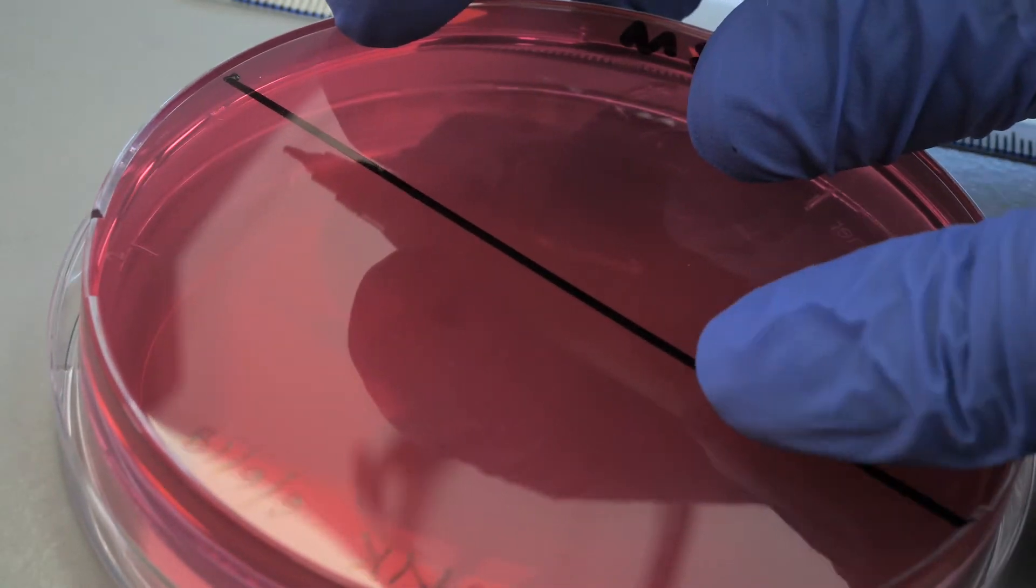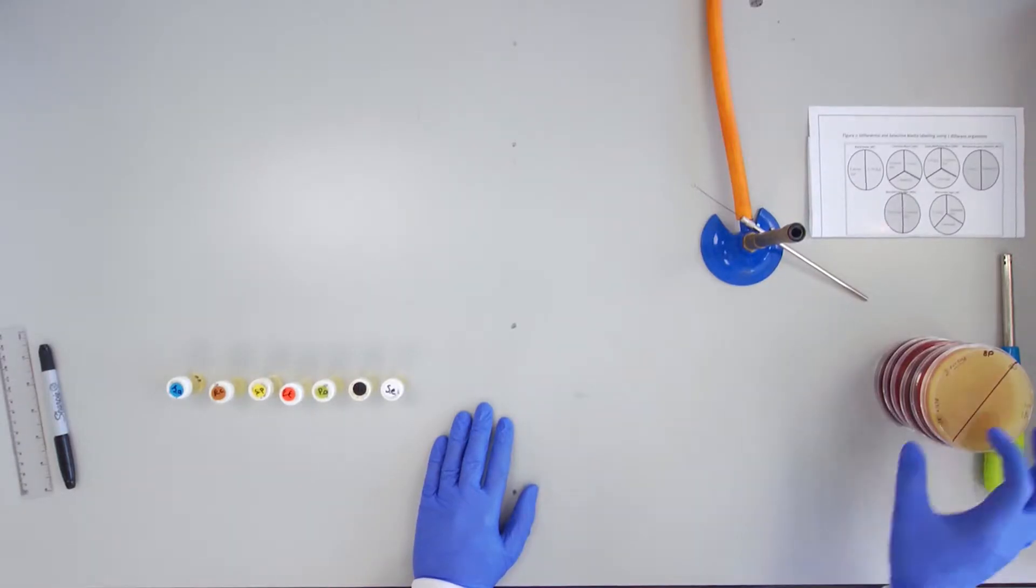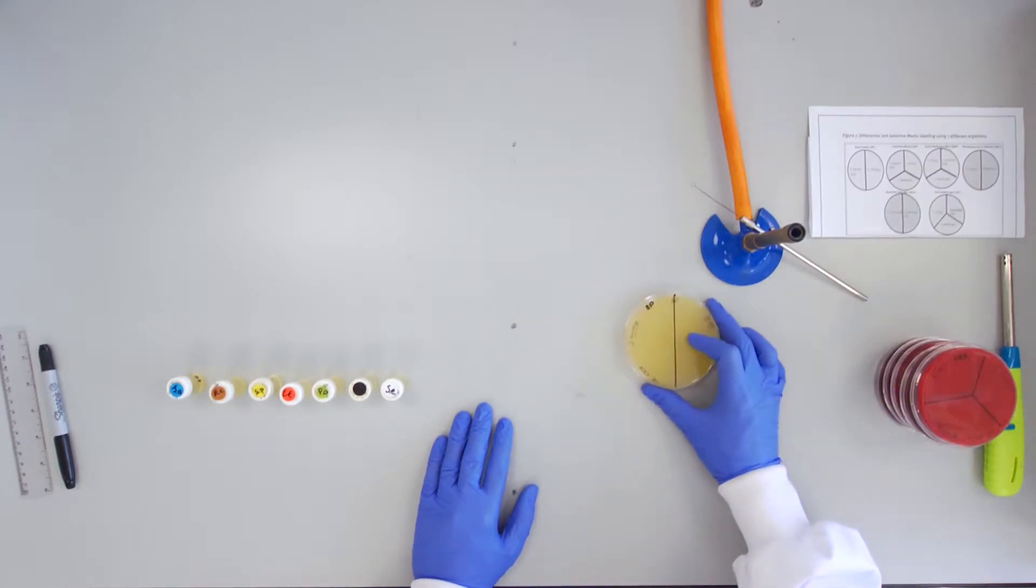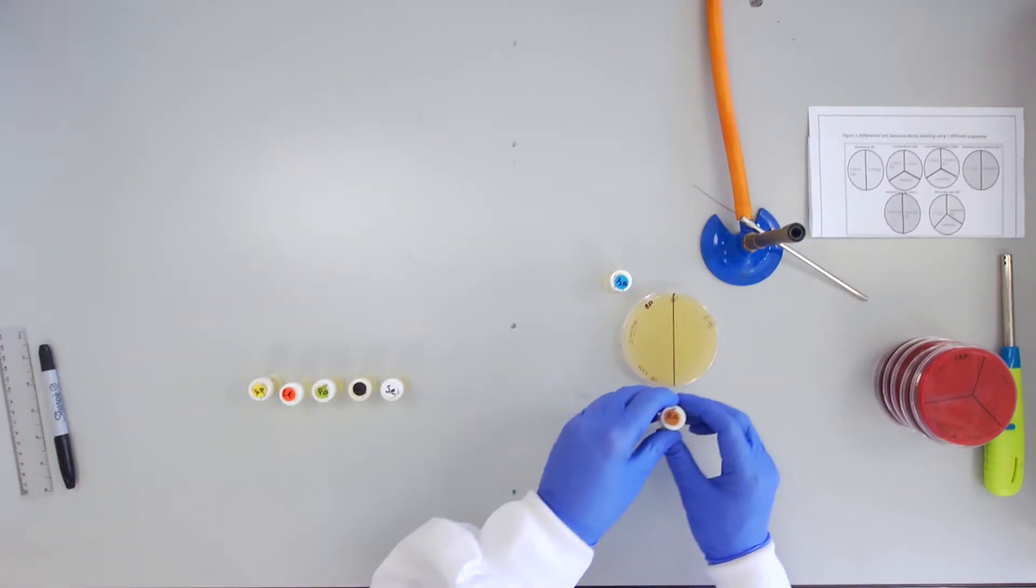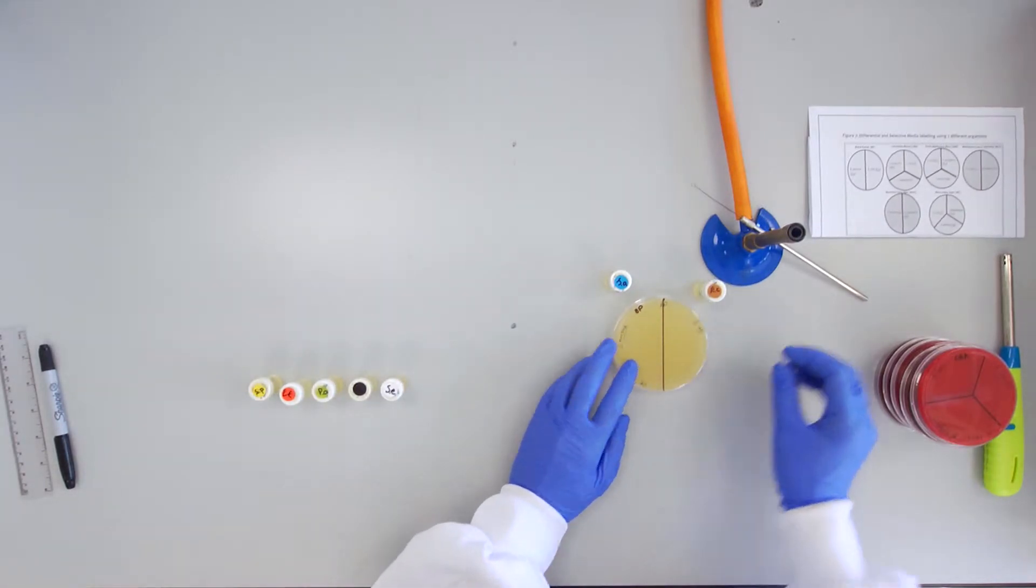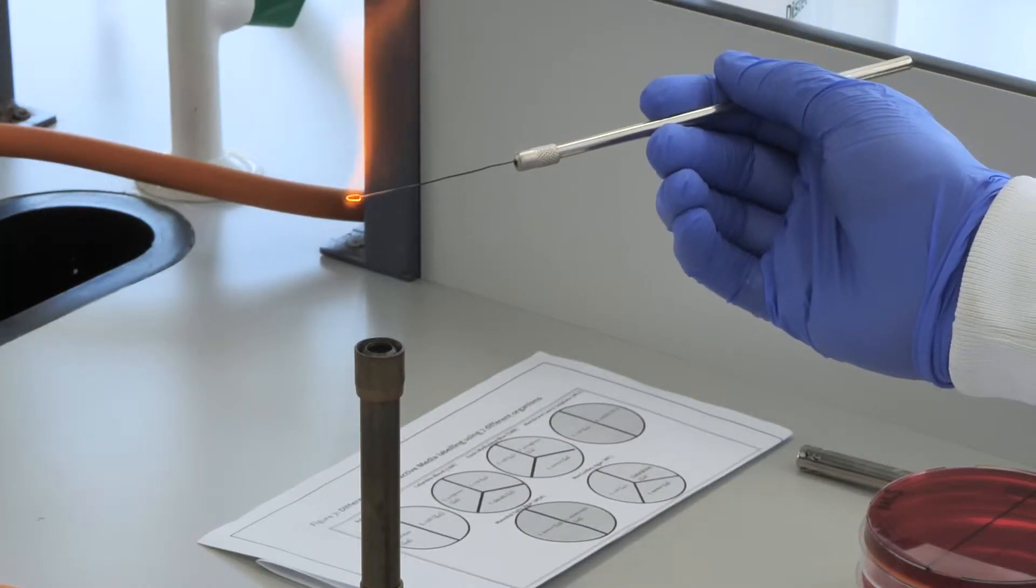The cultures are provided as an overnight broth. The Baird Parker or BP medium is pale yellowish and opaque and will be inoculated with Staphylococcus aureus and E. coli.